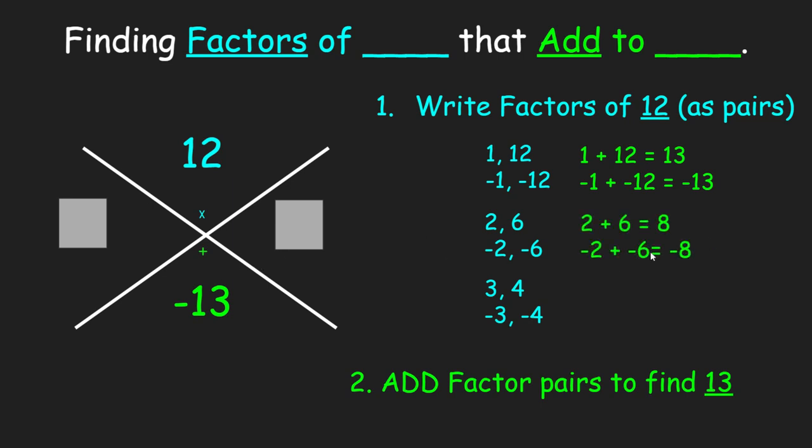2 plus 6 is 8, negative 2 plus negative 6 is negative 8, and 3 plus 4 is 7, negative 3 plus negative 4 is negative 7. So now that I know my answer, which is negative 1 and negative 12, I write that in. And as I said before, it doesn't matter the order. You could have written this as negative 12 and this as negative 1, as long as the negatives are there. That's really important.